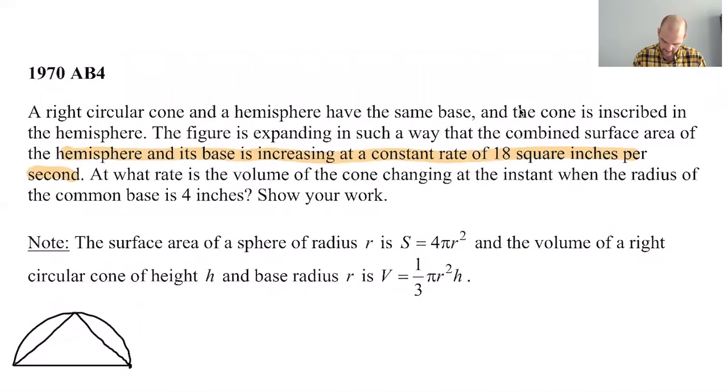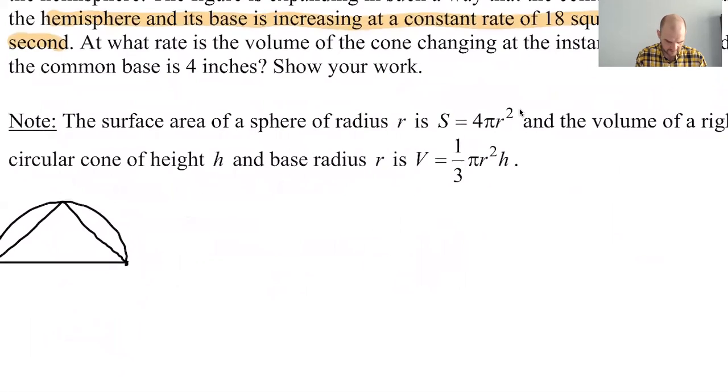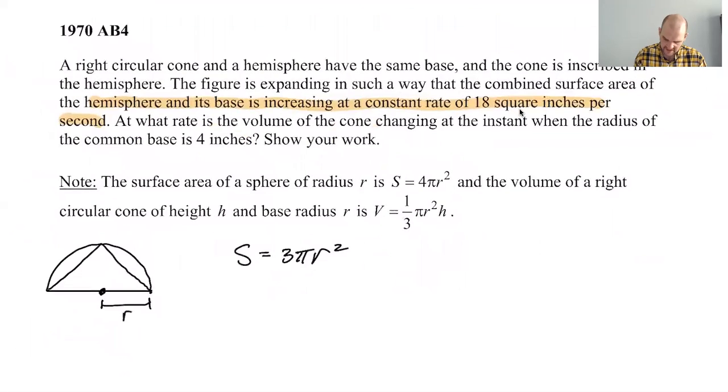We're told that the surface area of a sphere is 4πr², which you should probably know. We're going to get half of that because it's a hemisphere, so that's 2πr². But also the base is another πr². So I think the surface area that we're dealing with is 3πr².